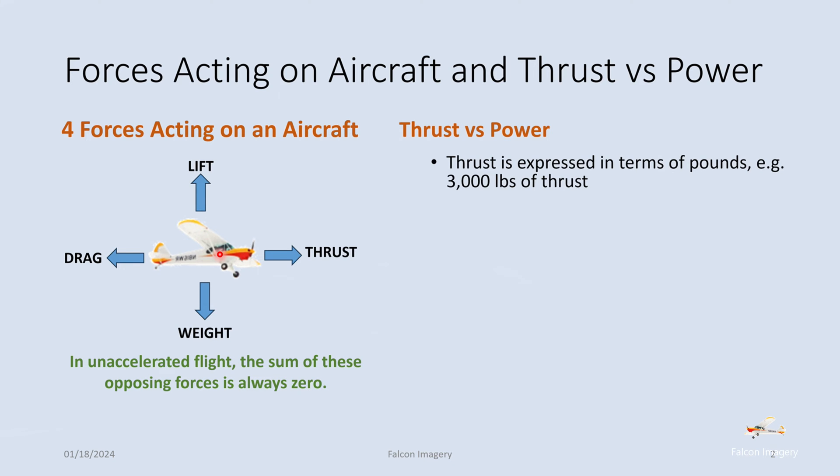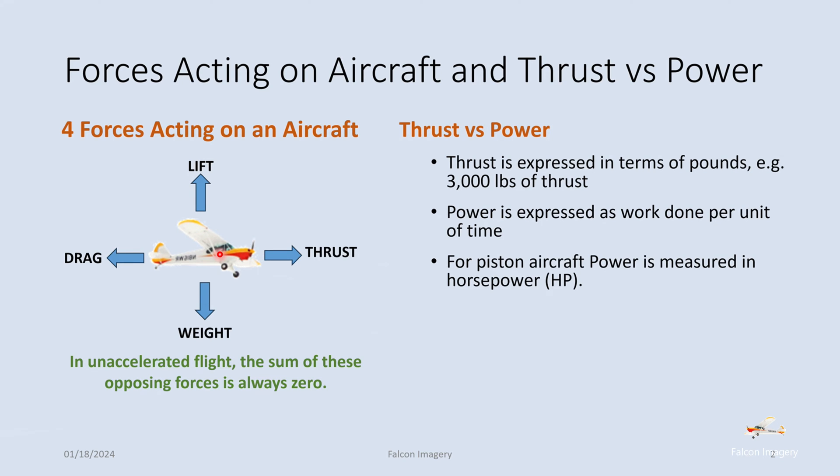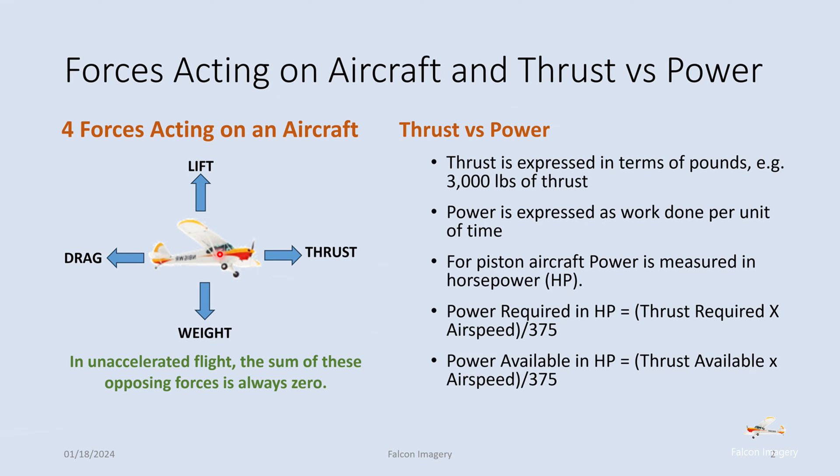With that basic concept, let's talk about what thrust versus power is. Thrust is expressed in terms of pounds — for example, 3,000 pounds of thrust. Power is expressed as work done per unit of time. For piston aircraft, power is measured in horsepower. Power required in horsepower equals thrust required times airspeed divided by 375, and power available equals thrust available times airspeed divided by 375. Thrust is expressed in units of pounds, whereas power is expressed in units of horsepower and is associated with time.